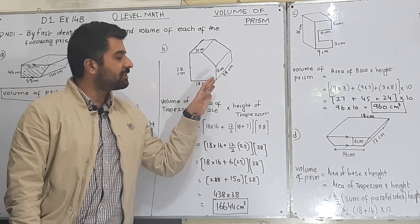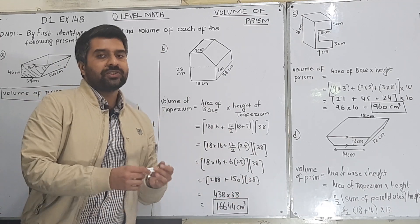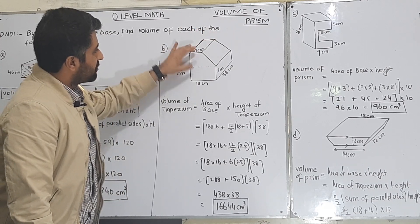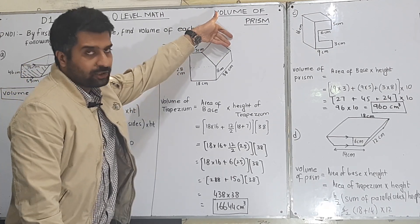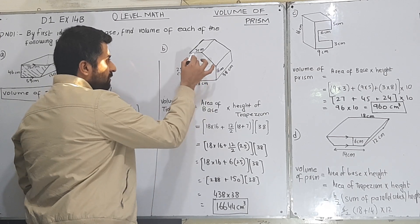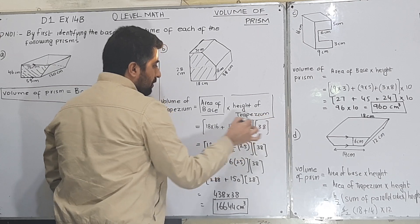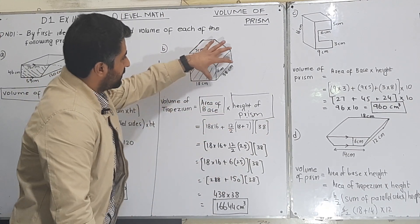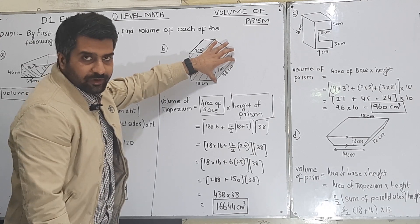Question number 1, part B. This shape is a prism. You need to identify the base — the base is the shape present at one end as well as at the back end. This shape travels all along the length of the prism and is present on the front as well as on the back side. So this is the base, and volume equals area of base multiplied by the height of the prism — the distance between the two bases.